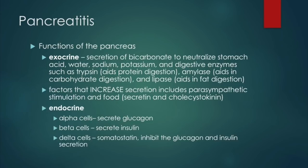Moving on to pancreatitis: the pancreas has exocrine and endocrine functions. Exocrine functions include secretion of bicarbonate to neutralize stomach acid, and secretion of water, sodium, potassium, and digestive enzymes such as trypsin (protein digestion), amylase (carbohydrate digestion), and lipase (fat digestion). Factors that increase secretion include parasympathetic stimulation and food. Endocrine functions include alpha cells secreting glucagon, beta cells secreting insulin, and delta cells secreting somatostatin, which inhibits glucagon and insulin secretion.